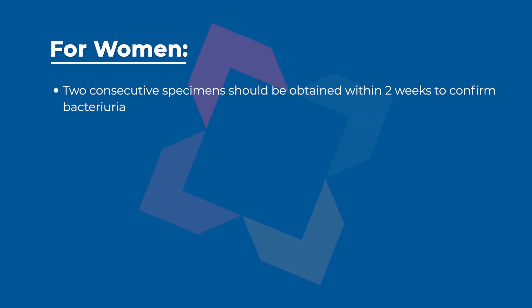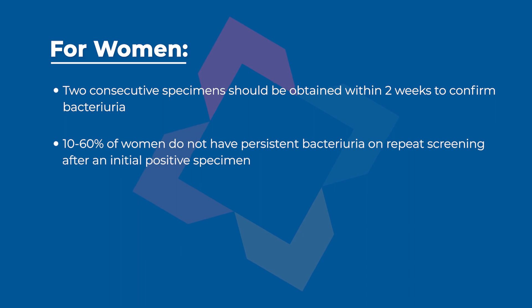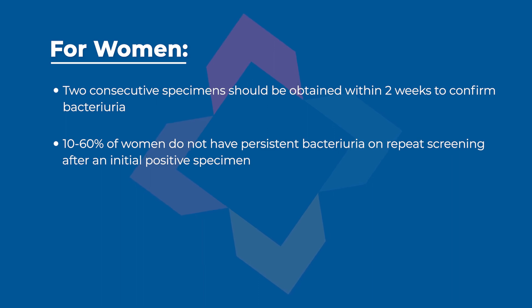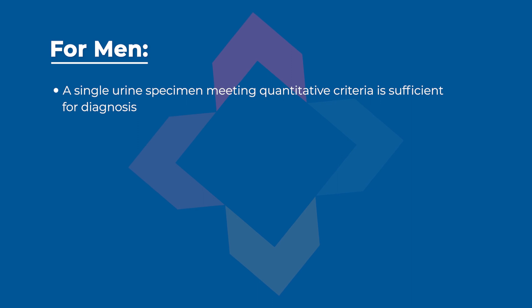The IDSA also includes that for women, two consecutive specimens should be obtained, preferably within two weeks, to confirm the persistence of bacteriuria. For 10 to 60% of women, depending on the population, they do not have a persistent bacteriuria on repeat screening after an initial positive. For men, a single urine specimen meeting these quantitative criteria is sufficient for a diagnosis.